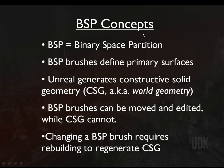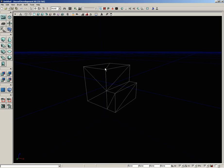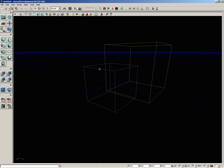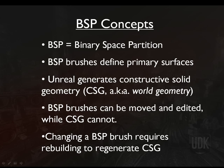BSP brushes can be moved and edited while CSG cannot. I can't select and move this piece of solid geometry - clicking faces is only useful for applying materials. If I want to move the block, I need to go into brush wireframe mode and move the brushes that are generating that solid geometry. Changing a BSP brush's position or shape requires that you rebuild your geometry to regenerate the CSG. Any change at all means you have to rebuild.